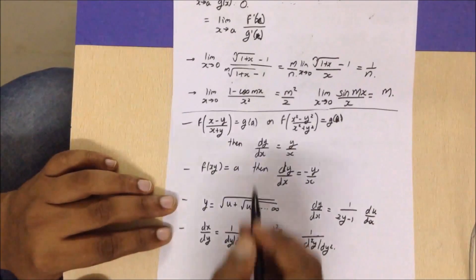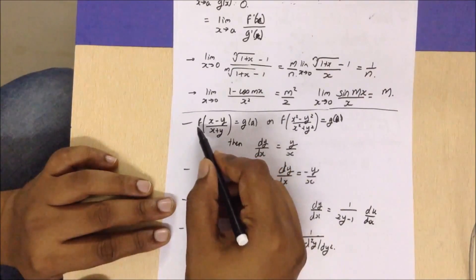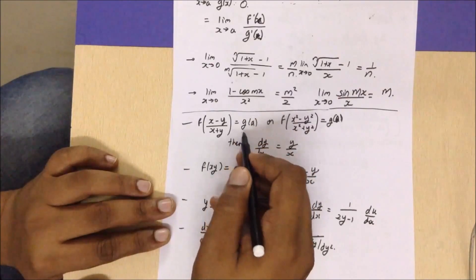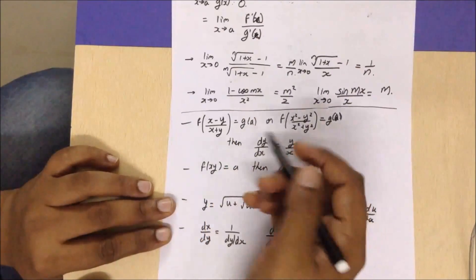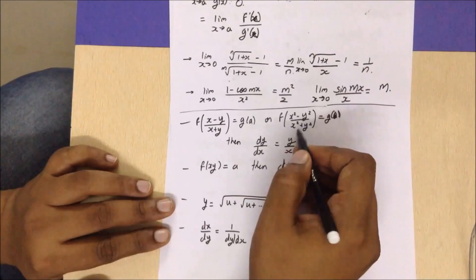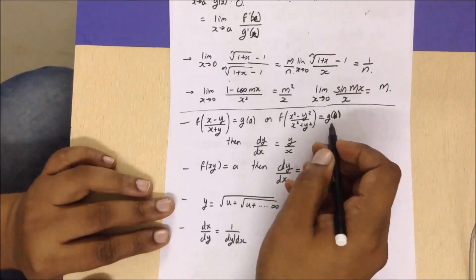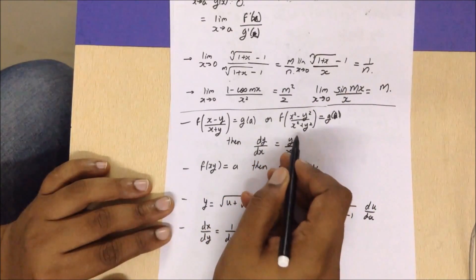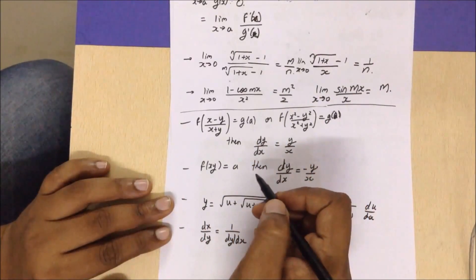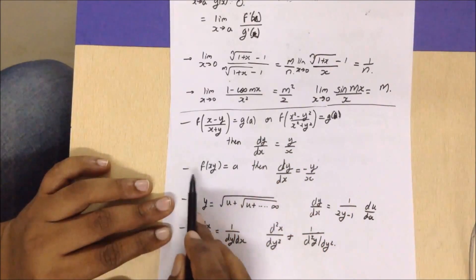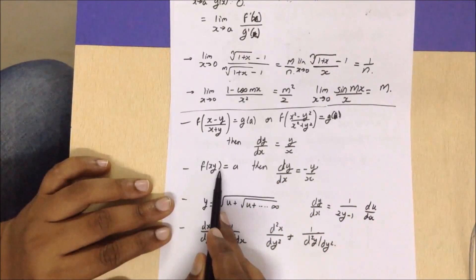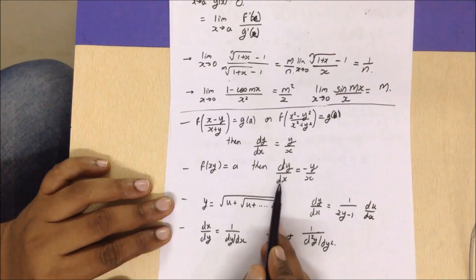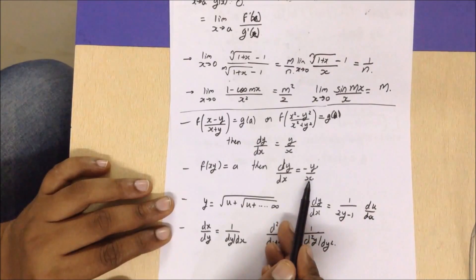Moving to the derivatives chapter: if you have a function of (x - y)/(x + y) or (x² - y²)/(x² + y²) given as some constant, then finding dy/dx will give y/x as the solution. Also, if you have a function of (xy) equal to some constant, then dy/dx will be equal to minus y/x.